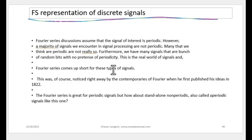Fourier series falls short for aperiodic signals, and this was noticed immediately by Fourier's contemporaries who criticized his work for not covering aperiodic signals. Being a good mathematician, Fourier worked for about 20 years and came up with what we now call the Fourier transform. If it took him 20 years, it is understandable if we don't grasp it immediately — the subject requires revisiting several times before it becomes crystal clear and easy to apply.